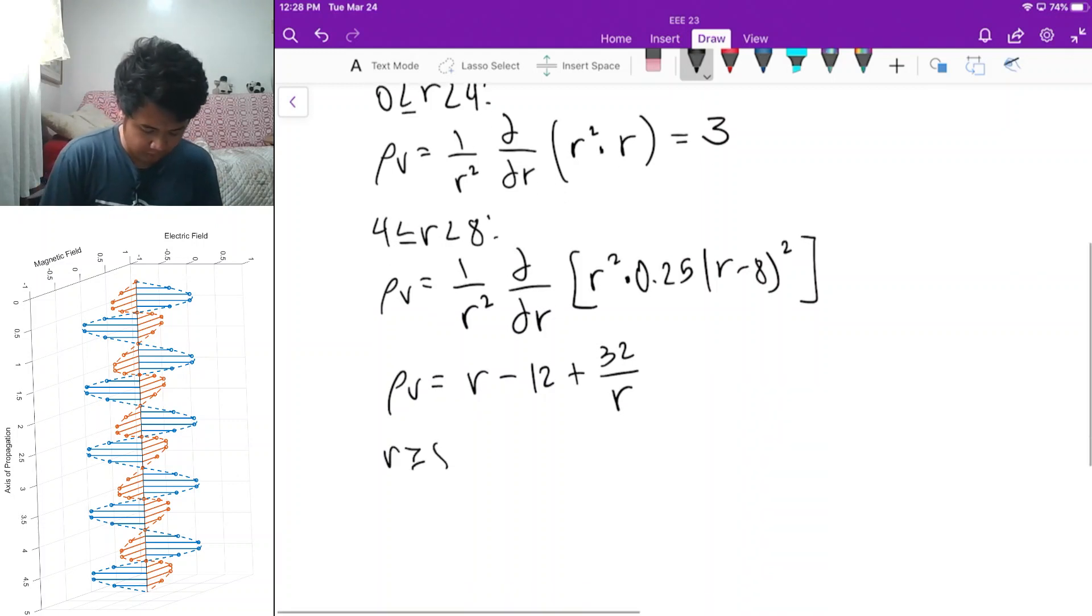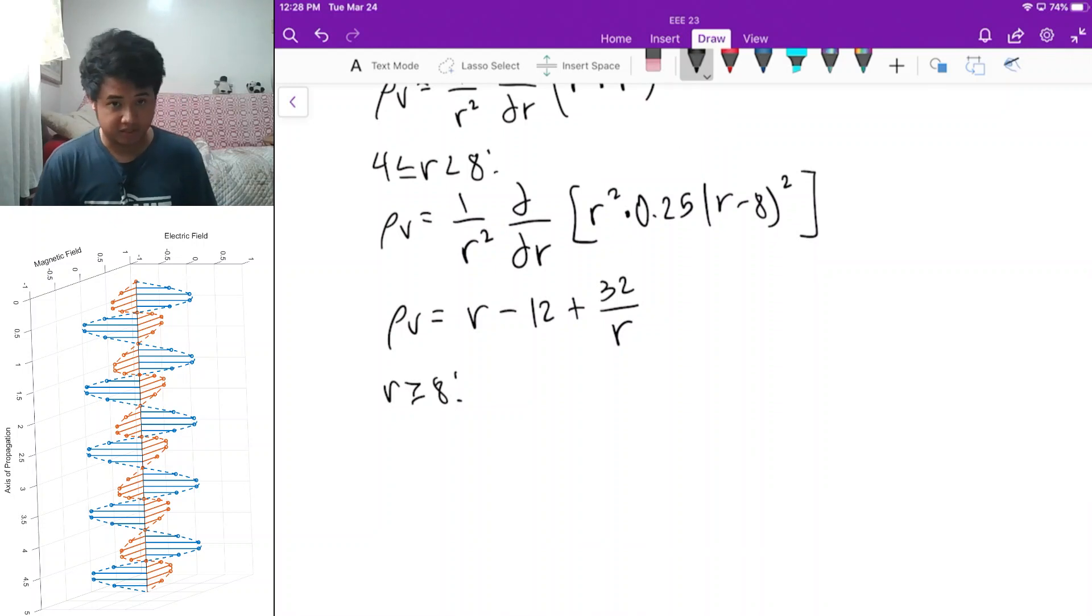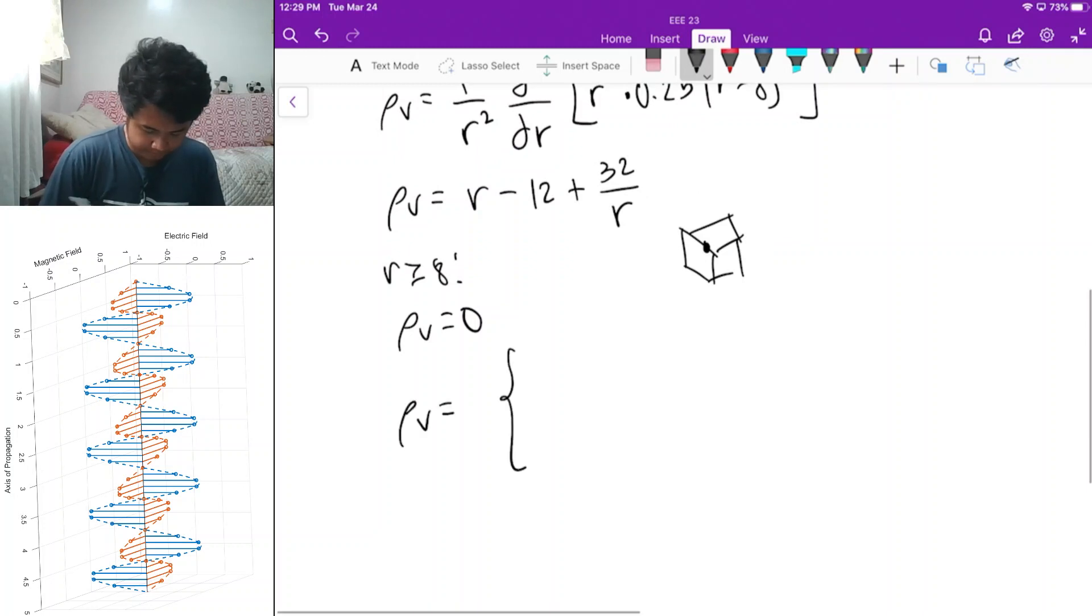Finally, for the region r greater than 8, since the electric flux density is 0, then it follows that the divergence of that is also 0. Remember that the definition of divergence is you're trying to enclose a certain point in space using a box that you make very small. You imagine a box that you're trying to make very small and you're squeezing the point at the middle of the box. If that point has no charge in it, then there's no net flux in that box.